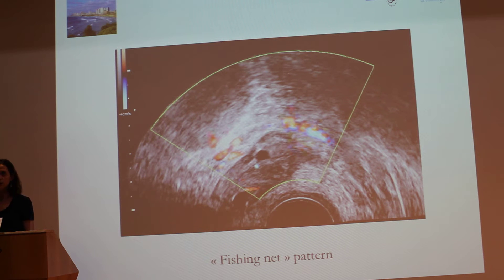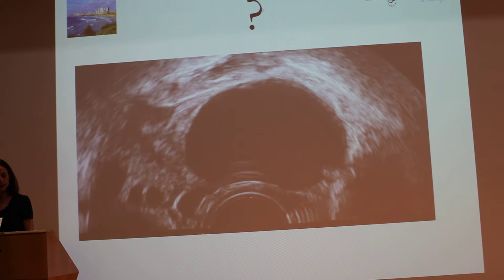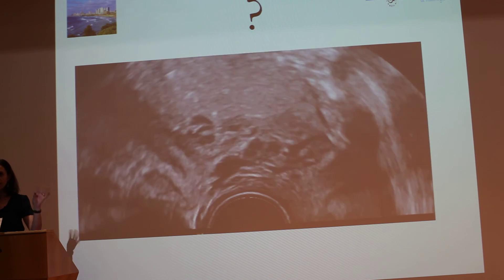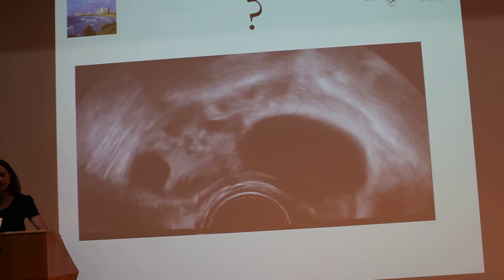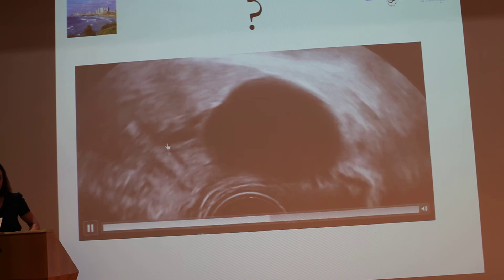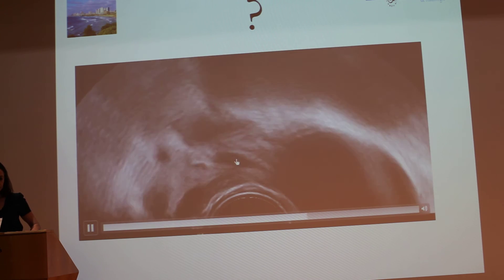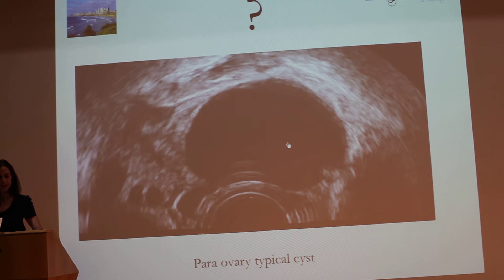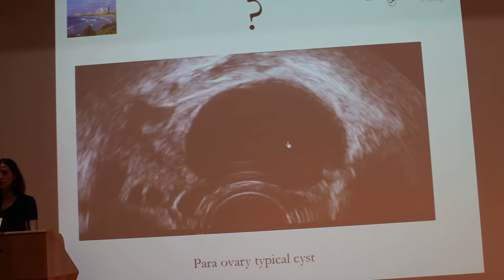When you are in front of this typical pattern, you don't need to perform MRI. In another situation shown in this clip, a patient with acute pelvic pain presents with this cyst. Managing the exam with the other hand, you do compression between the ovary and the cyst and can see there is a separation — they are a separated ovary and cyst. So this is a para-ovarian cyst, and there is no need for surgery and no need to perform MRI.